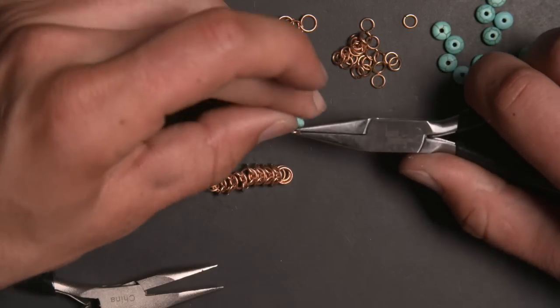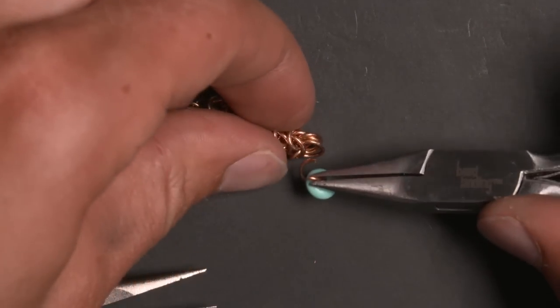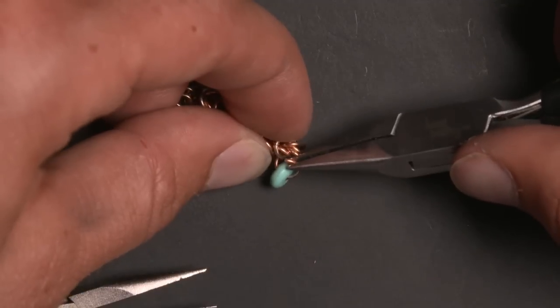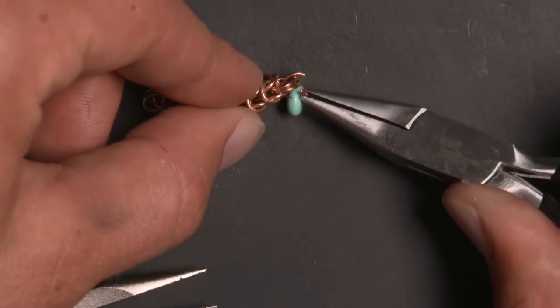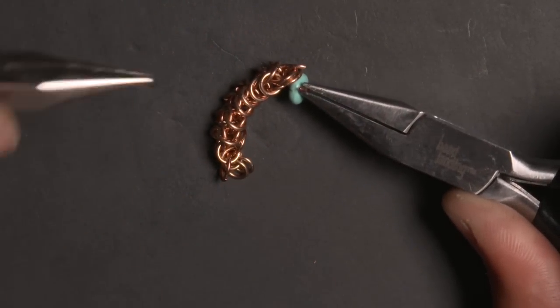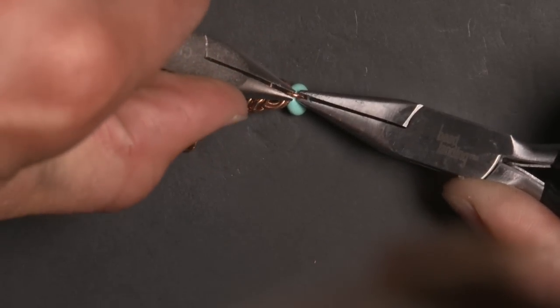Now we can take a large ring and put a turquoise bead on it, and what we're going to do is go through the second last large ring on the box chain on one side and come out the last large ring of the box chain on the other side. So in total we're going through four rings.